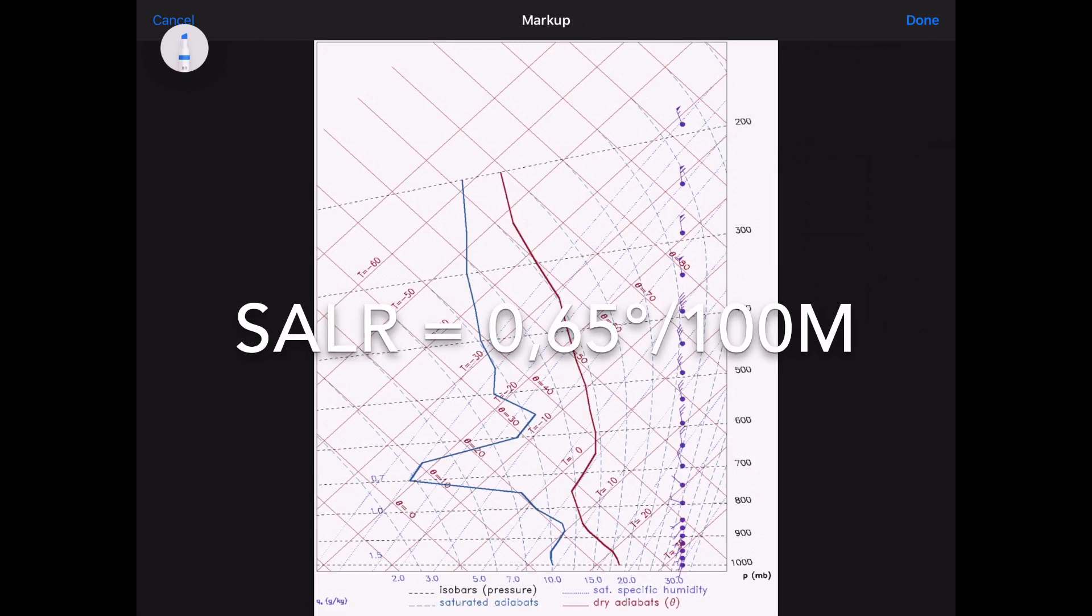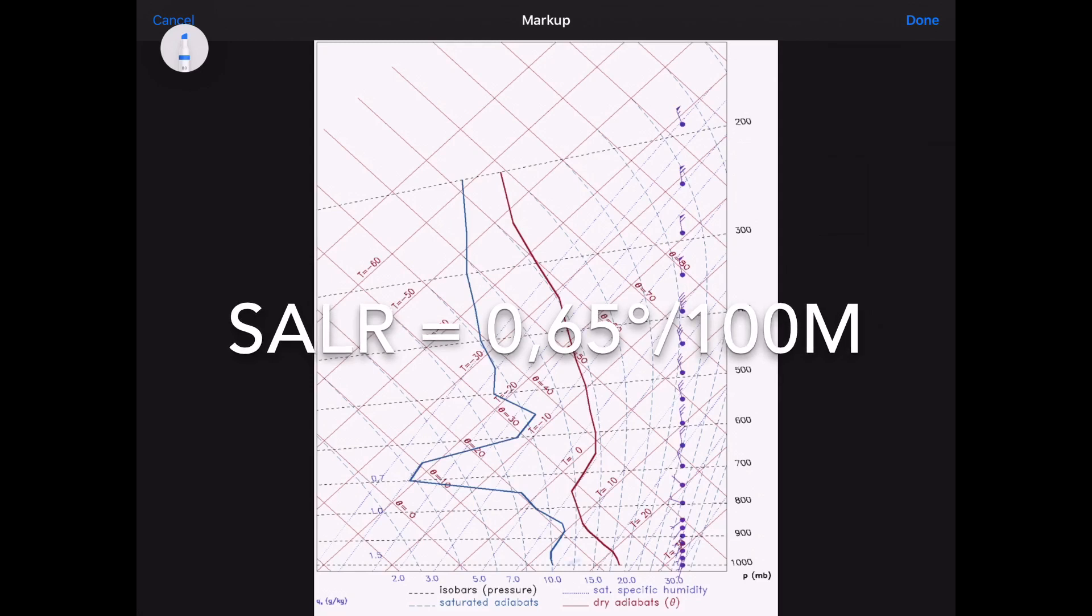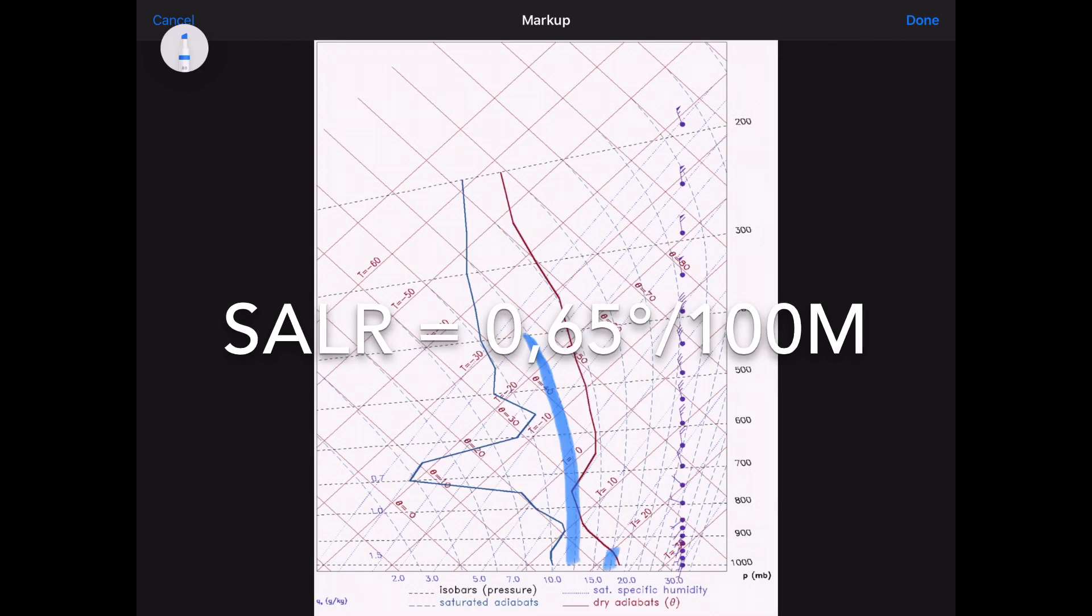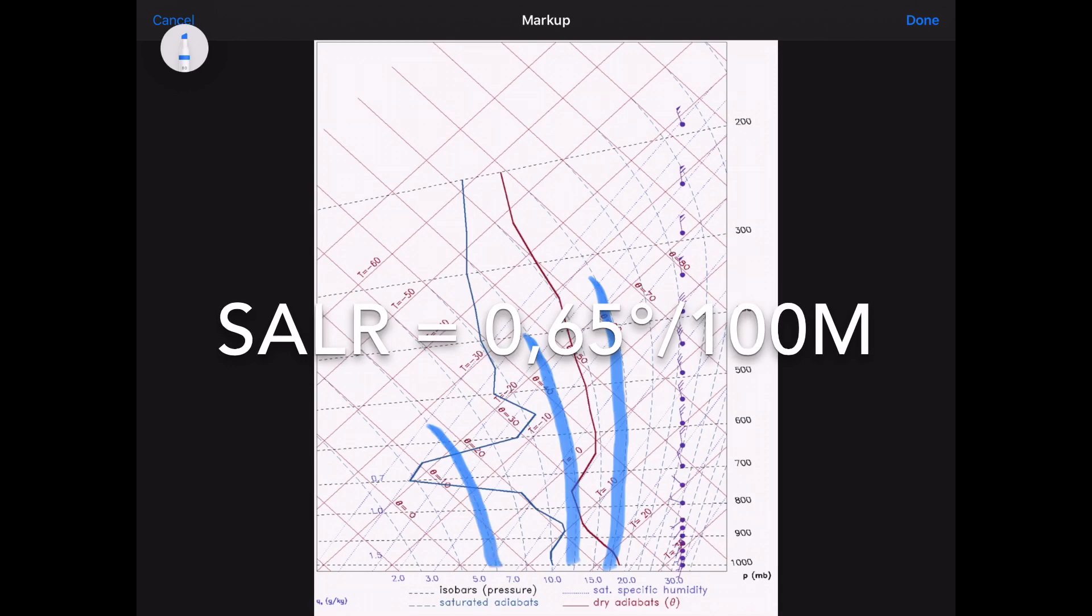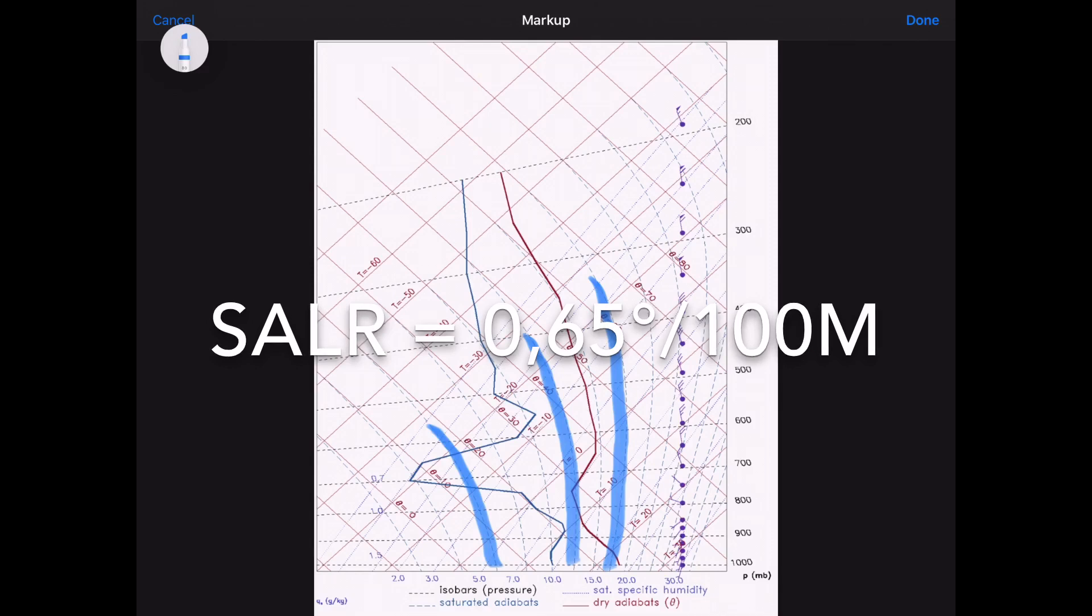Now the next constant is the saturated adiabatic lapse rate. These are the thin blue lines that are curved. Now these are the lines that once a thermal has turned into a cloud if it's allowed to, these are the lines that the air inside the cloud will cool at.